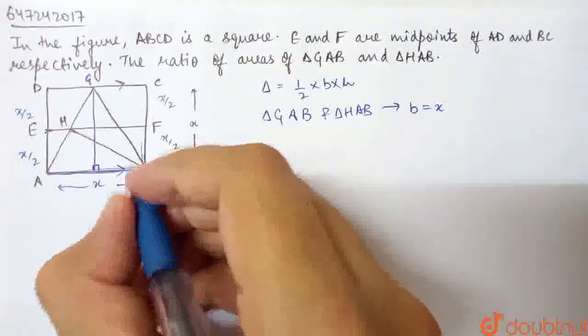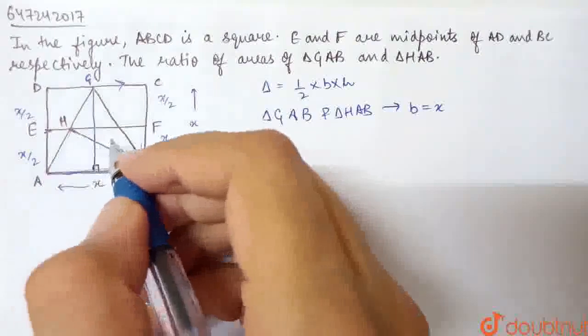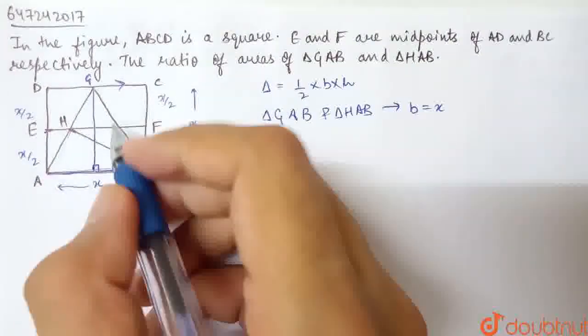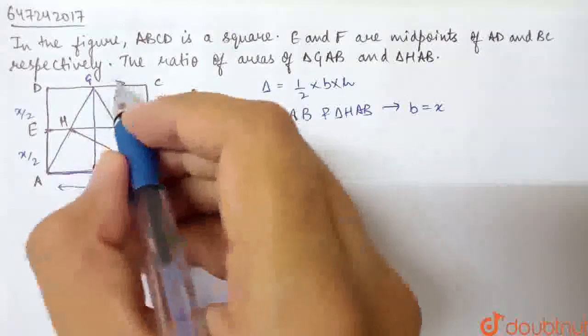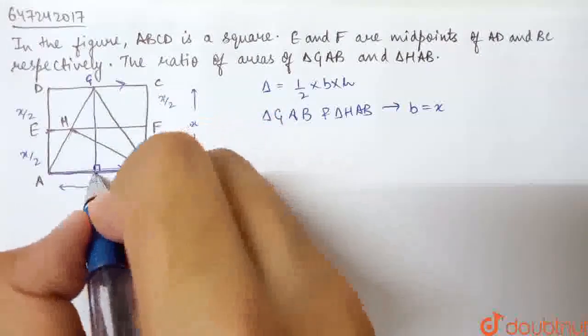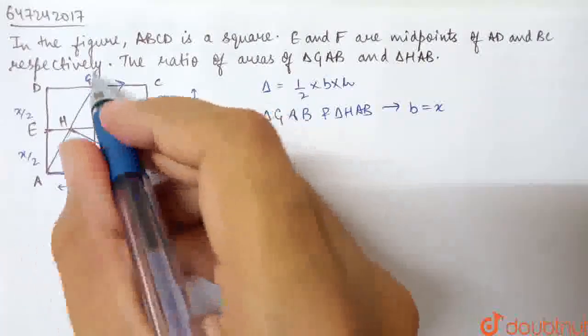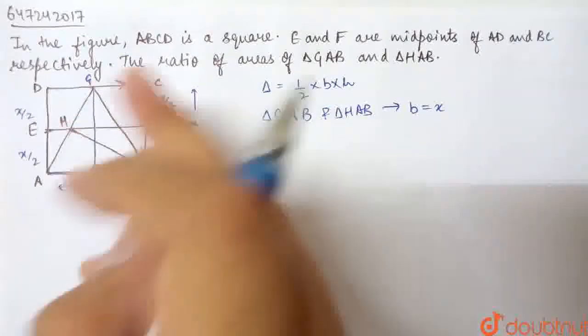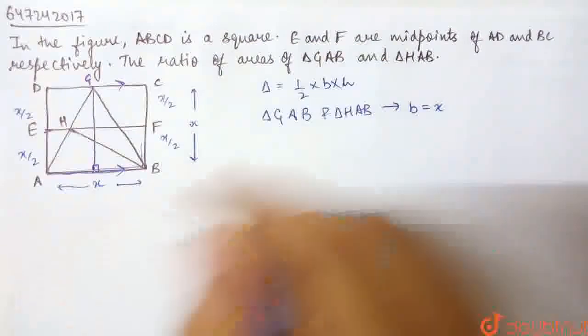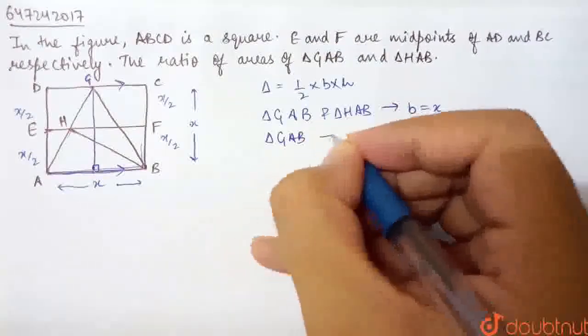By the square property, opposite sides are equal and parallel. So here we have these sides equal and parallel. Since they're parallel, the distance between this point and this line is the height of triangle GAB. The distance between these parallel lines is X. Therefore, for triangle GAB, the height H equals X.